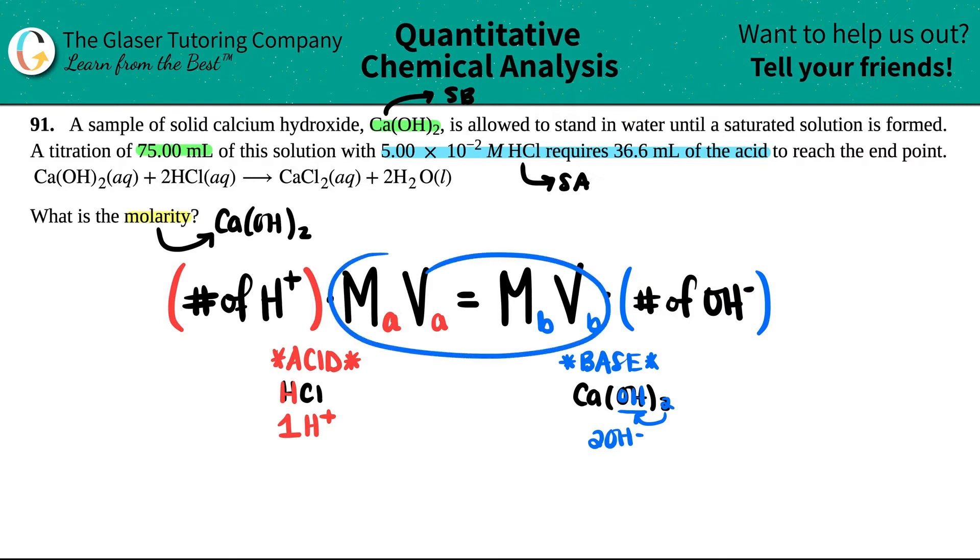Let's put all the other numbers in here that I know. So let's see the acid side, these values, right? They told me that I had 5.00 times 10⁻² molarity of HCl. So I know the molarity, 5.00 times 10⁻² molarity. And they said that it requires 36.6 mL of that acid. So I know what the volume is here, 36.6 mL.